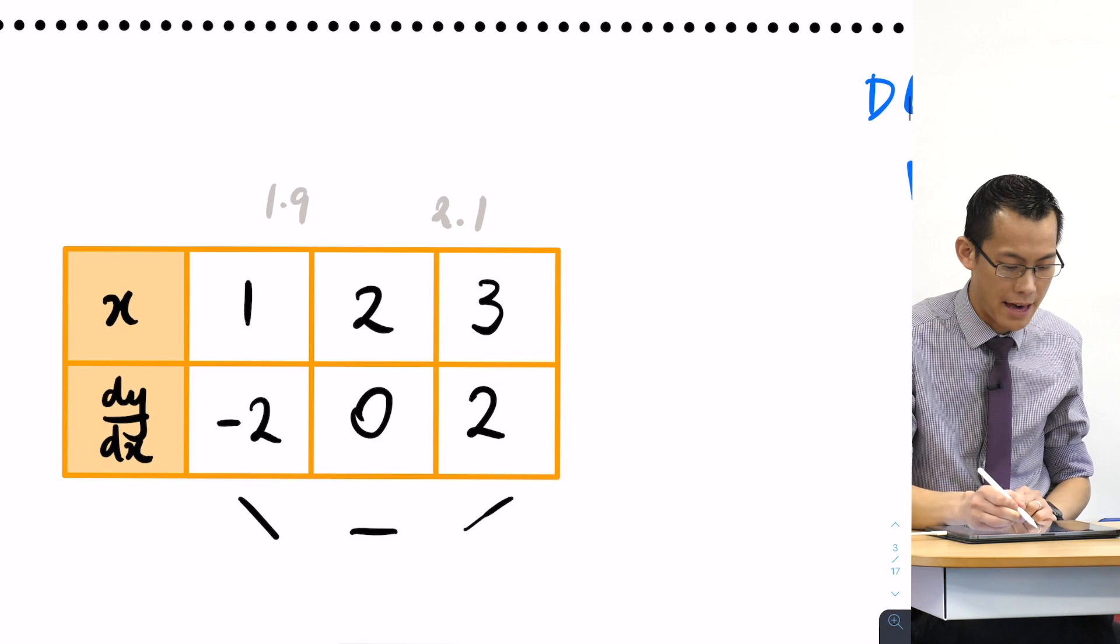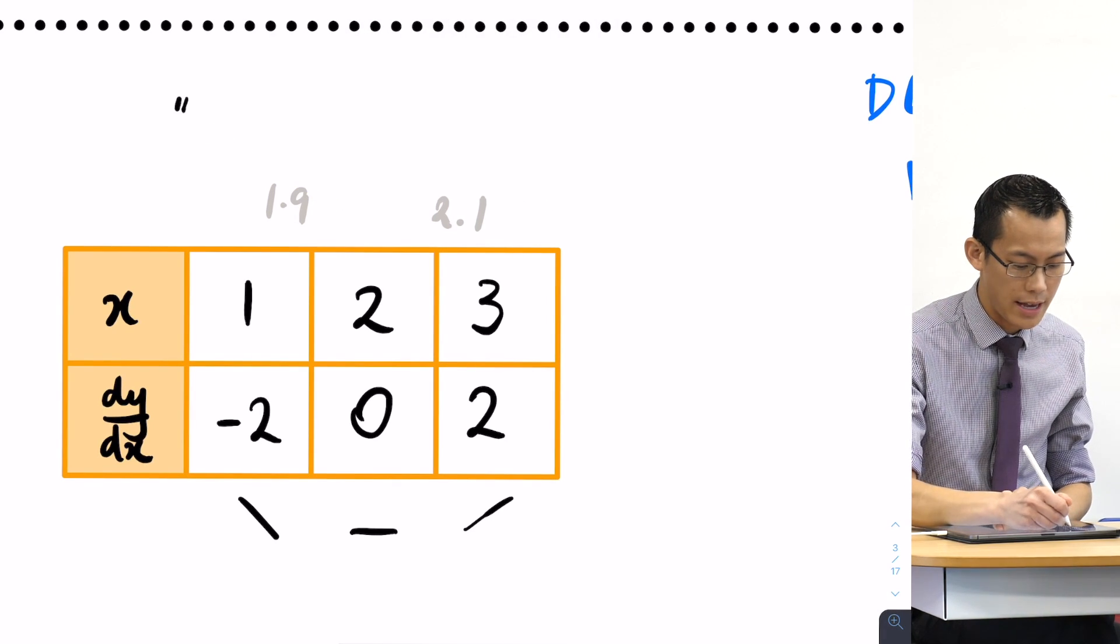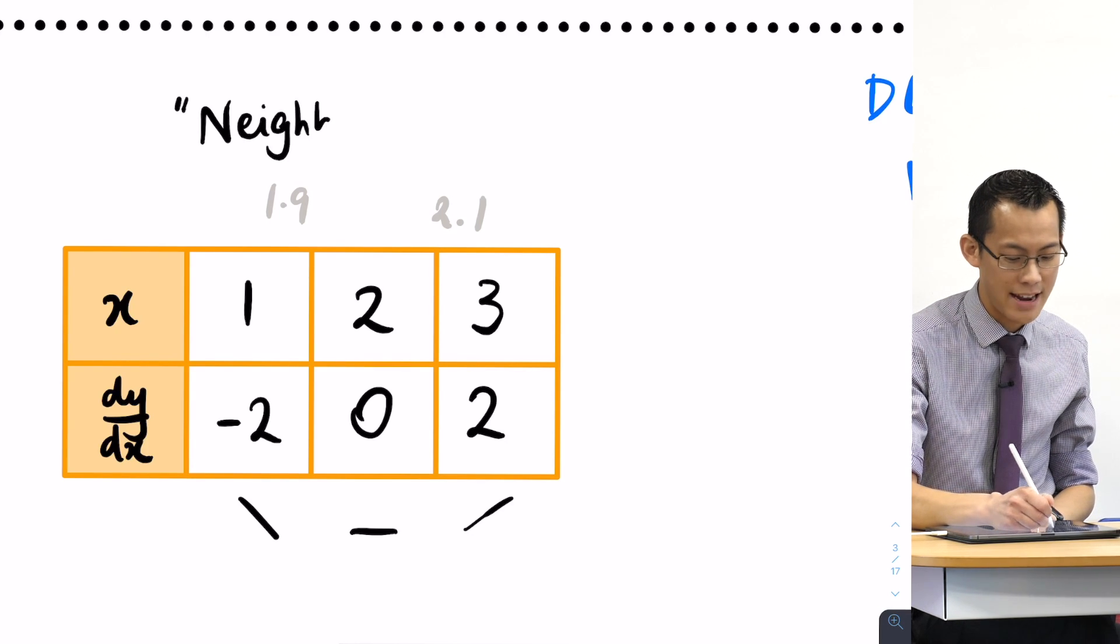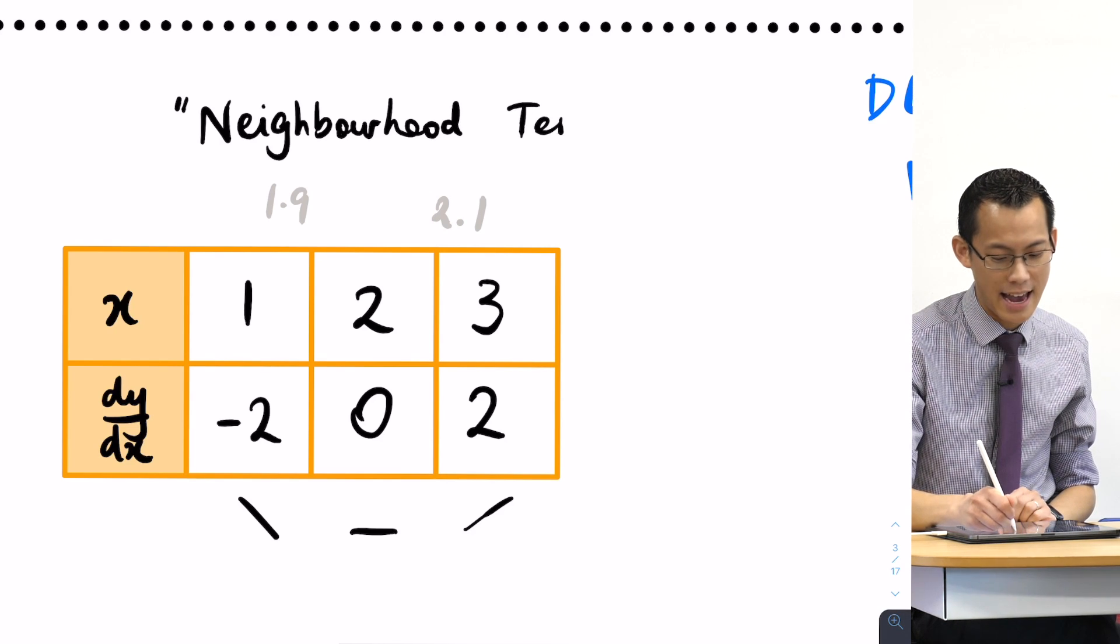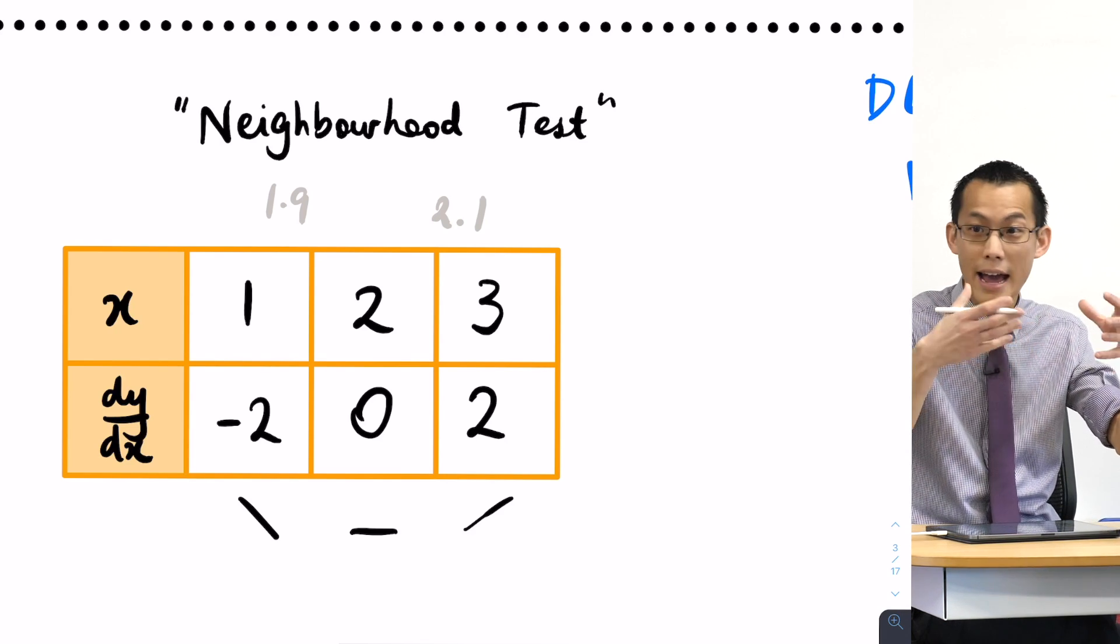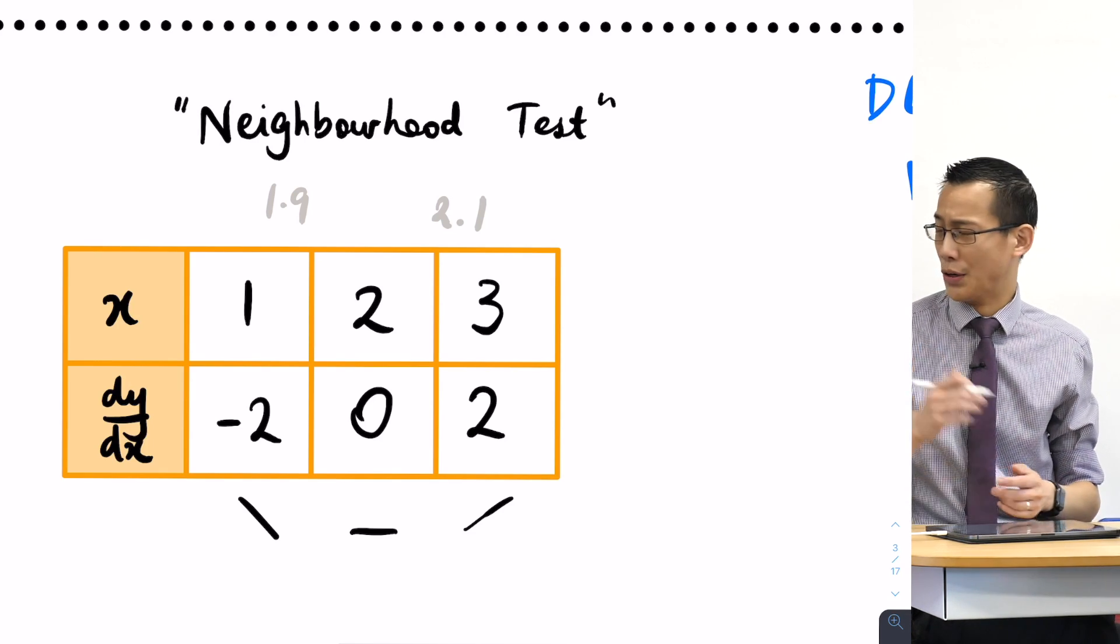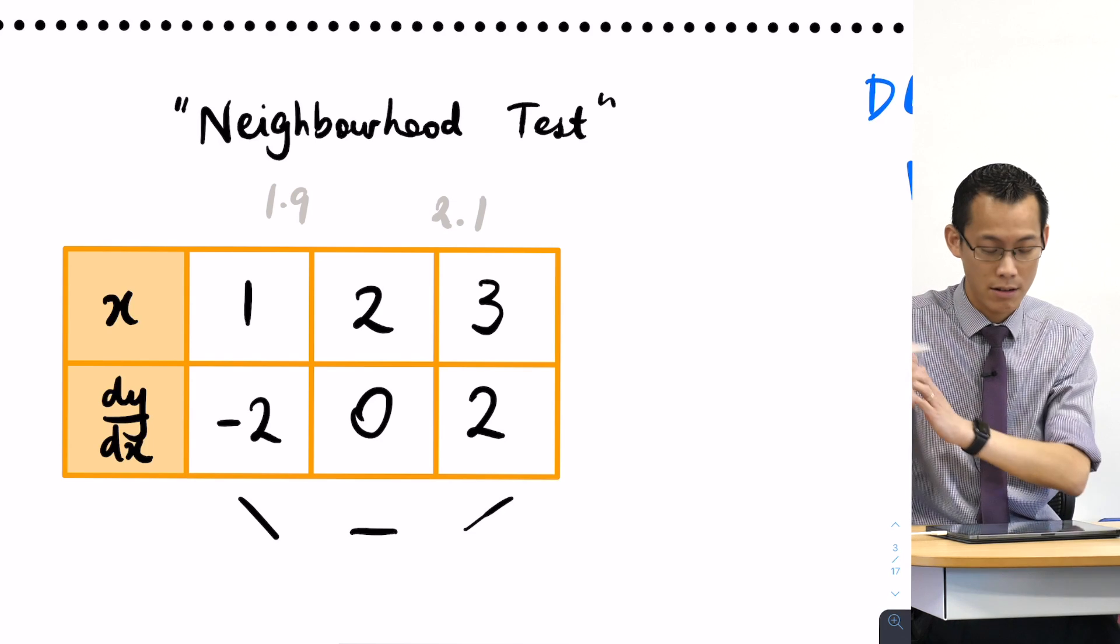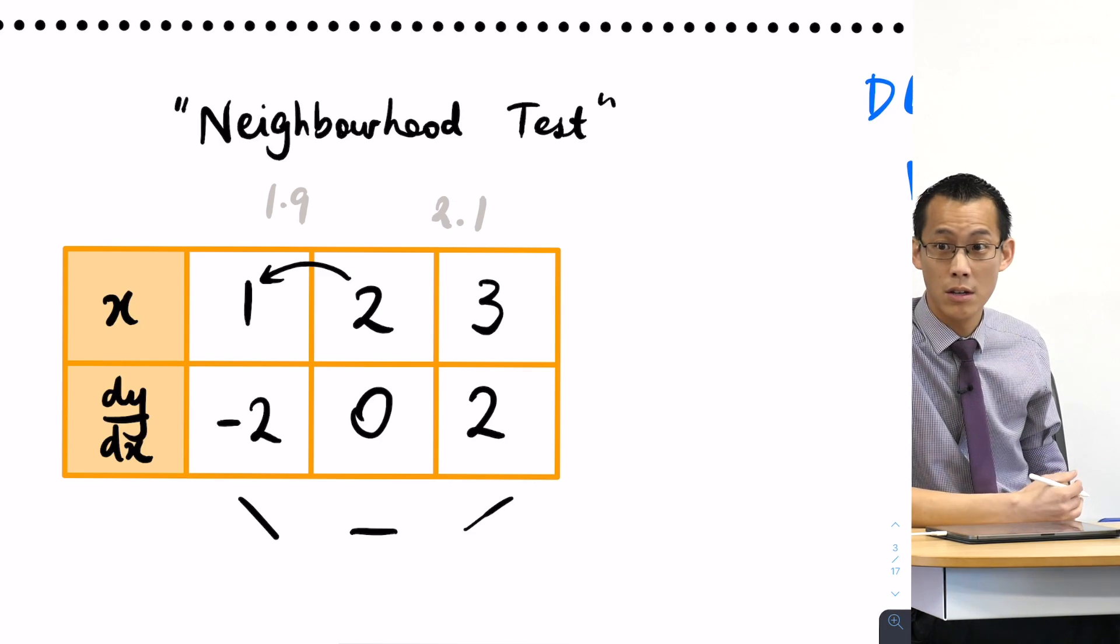Ah, okay, so I was just highlighting there that when you are - we call this by the way, I might even write this for you - and we call this thing not just a table of values, we also sometimes call it a neighborhood test, which is a very cute name, right? It is to say we want to look in the nearby area around this stationary point. Now the word nearby or neighborhood, it's relative, yeah? Is one unit away from the stationary point, is that close or is it far? And it kind of depends on the function.